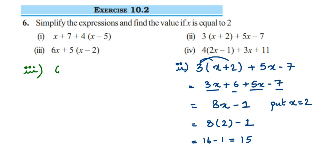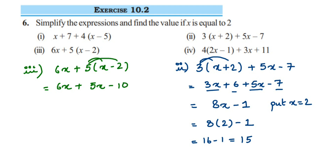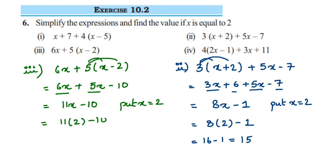The third expression is 6x plus 5 into (x minus 2). Open the bracket: 6x plus 5 into x is 5x, there is a minus sign, so put minus, and 5 into 2 is 10. Add the like terms: 6x and 5x are like terms, 6 plus 5 is 11, so we get 11x minus 10. Now put x equal to 2: 11 into 2 minus 10 is 22 minus 10, and we get the answer 12.